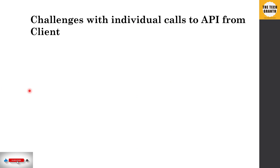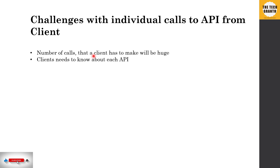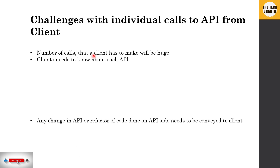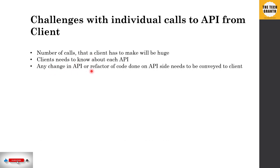There are several drawbacks when clients make one-to-one calls directly to services. First, the number of calls the client has to make is huge. Second, the client must maintain the configuration of each service — knowing exactly where each service is deployed, its URL and port.